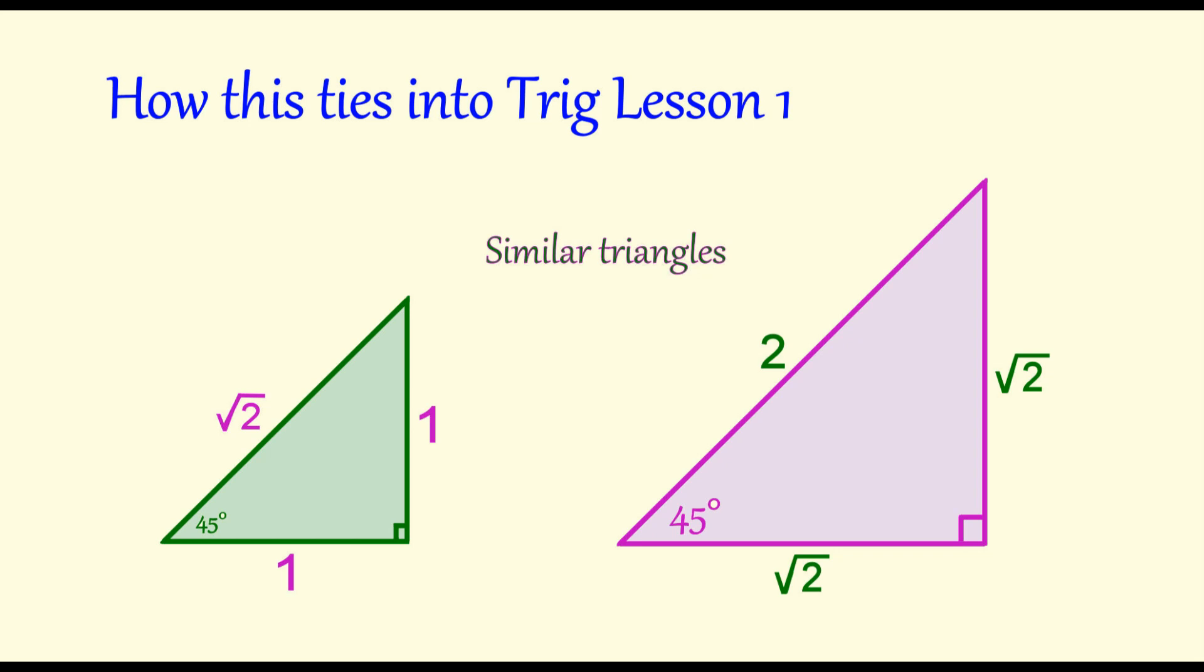The large one was obtained by multiplying each side of the small triangle by square root 2. Check that out. Does it make sense? 1 times square root 2, you get the 2 square root 2's on the sides. For the hypotenuse, square root 2 times square root 2 is 2.